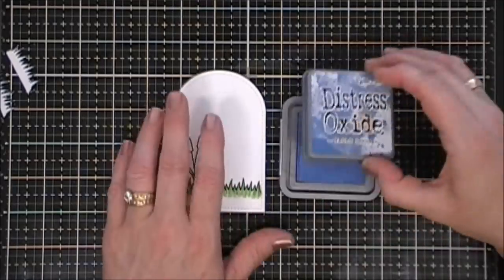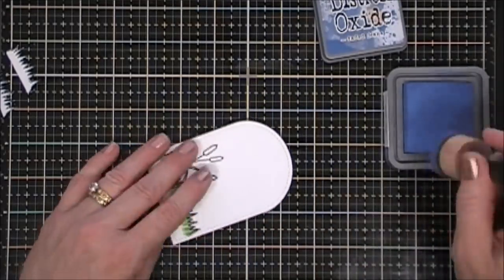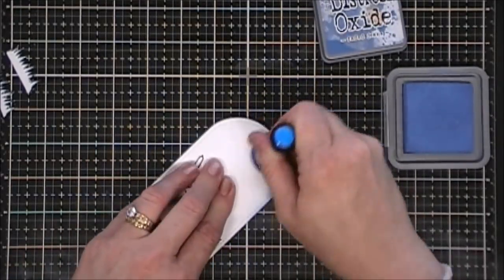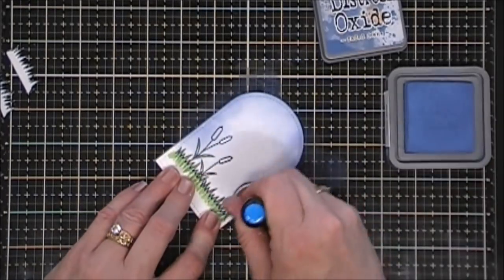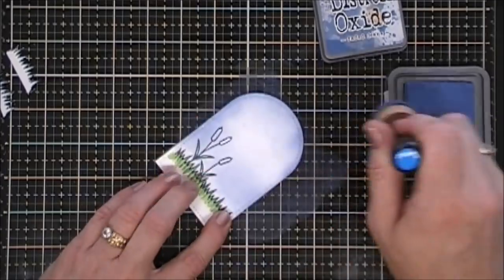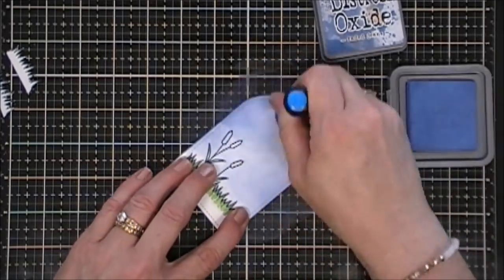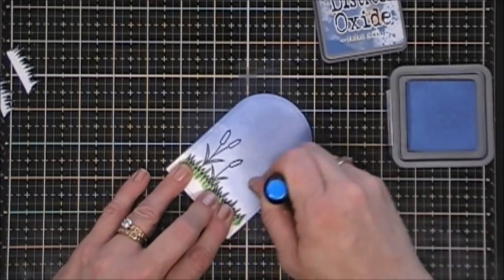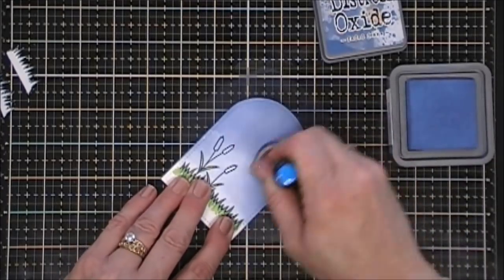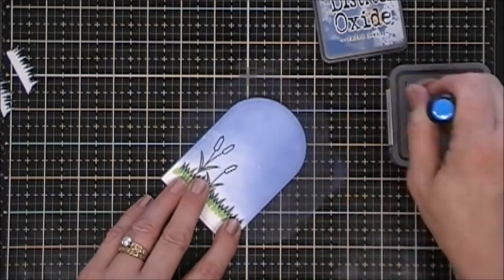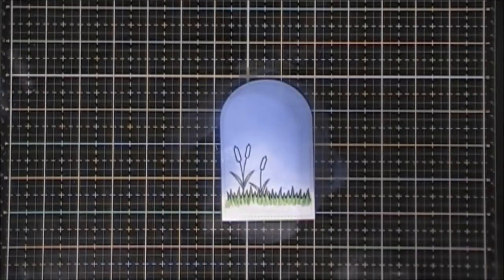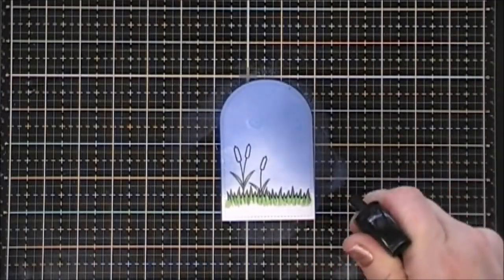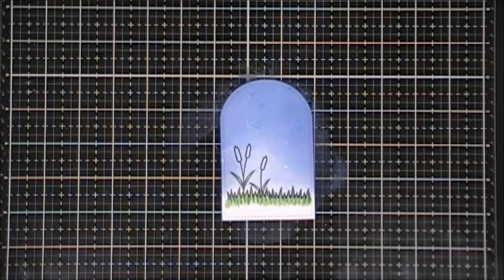My grass is all colored in. To create my background I chose some Distress Oxide ink. This is Faded Jeans and I'm going over really heavy on the top, but I'm going very lightly around my little willows there, just creating like a little halo around them.